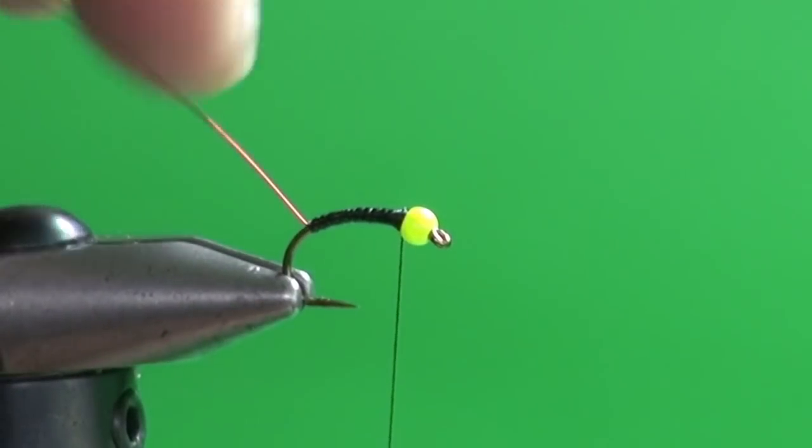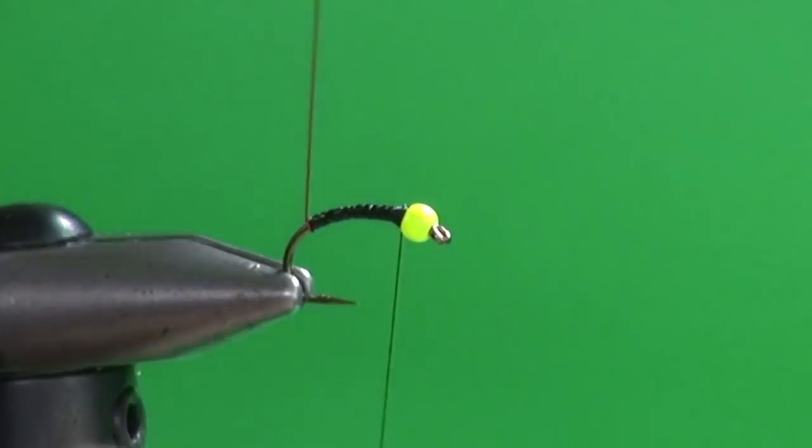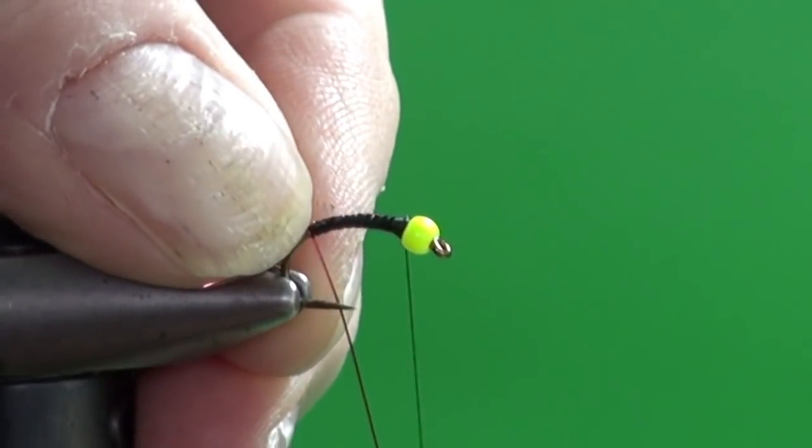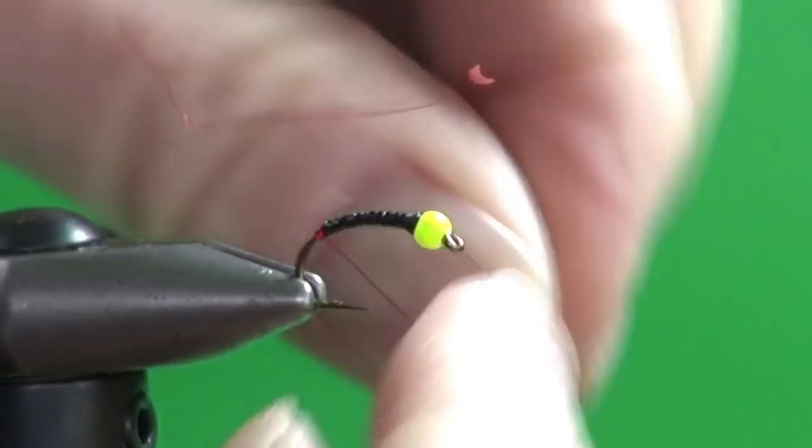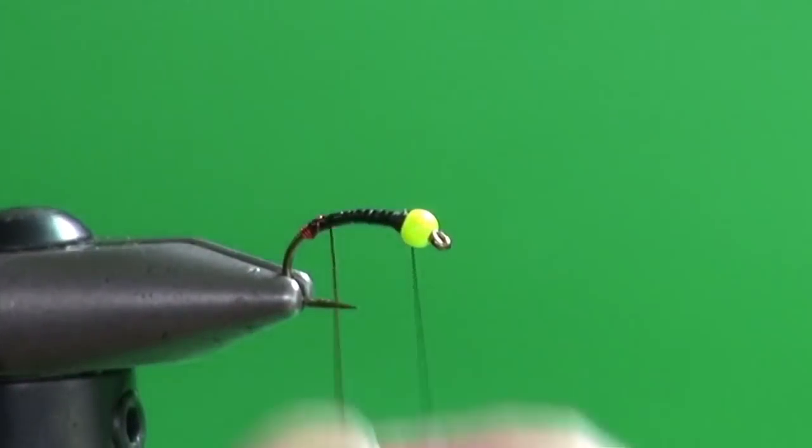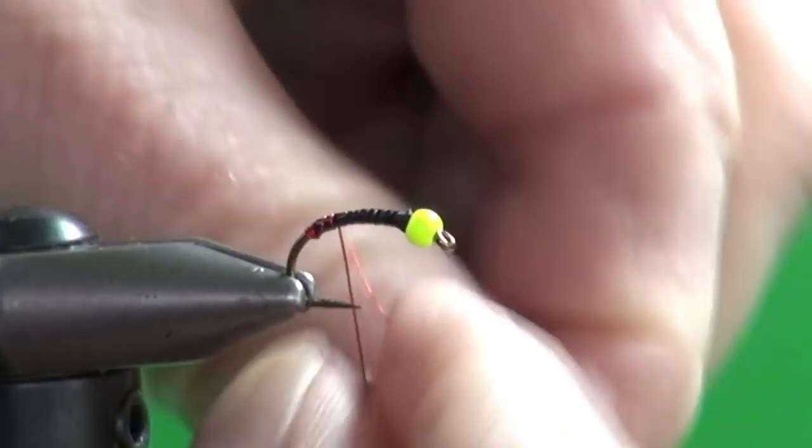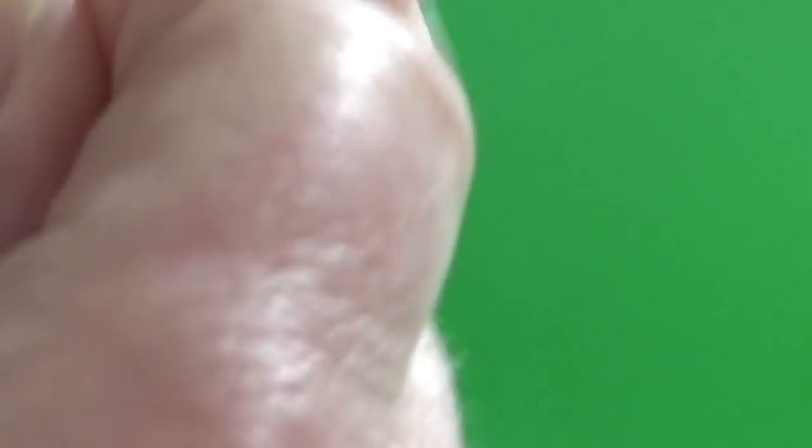So now all we're going to do is wind the wire forward. So the first couple of times I'm going to take the wire and I'm actually just going to make two or three turns right at the back of the fly to form a little red butt.